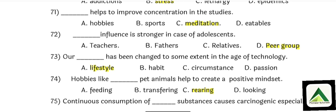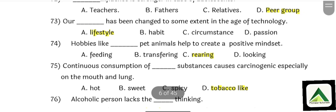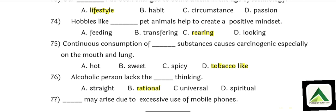Question number 74: Hobbies like rearing pet animals helps to create a positive mindset. That is option number C: Rearing. Question number 75: Continuous consumption of tobacco causes carcinogenic effects, especially on the mouth and the lungs — that is cancer. The answer is tobacco.